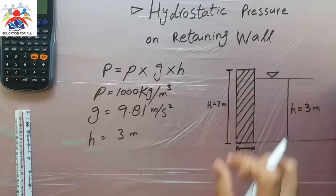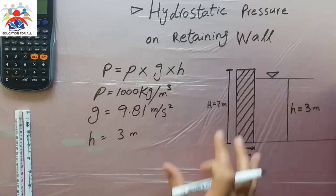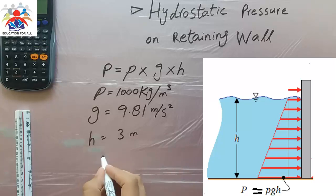This is the height of retaining wall which is 7 meters. We don't need to consider this one, this is just a dimension of the wall. So the formula is simple.